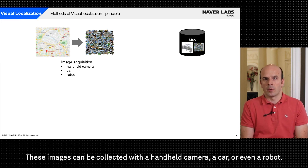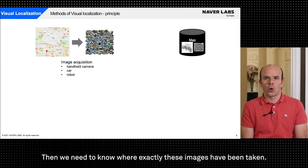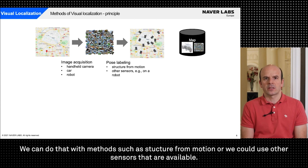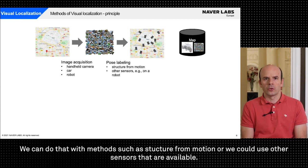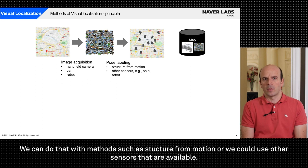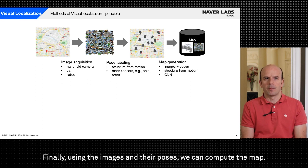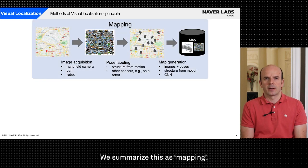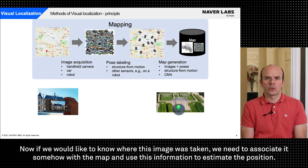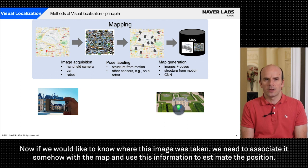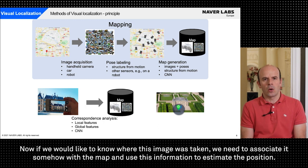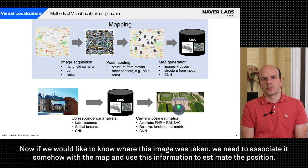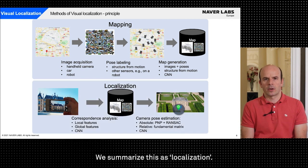Then we need to know where exactly these images have been taken. We can do that with methods such as structure from motion or we could use other sensors that are available. Finally using the images and their poses we can compute the map. We summarize this as mapping. Now if we would like to know where this image was taken we need to associate it somehow with the map and use this information to estimate the position. We summarize this as localization.